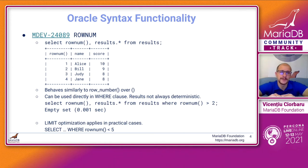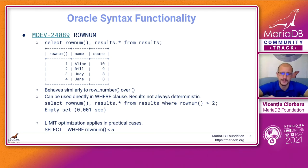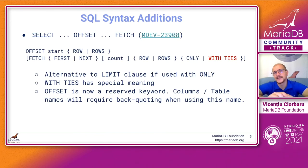Additionally, there are optimizations applied to ROWNUM. For example, if you do SELECT WHERE ROWNUM is less than five, we treat this as a LIMIT 5 clause and apply all the optimizations that LIMIT would have. That's it for Oracle-based compatibility — let's move on to regular SQL syntax additions.